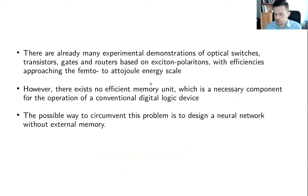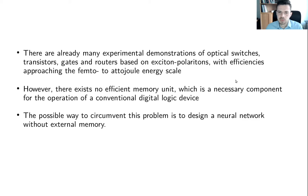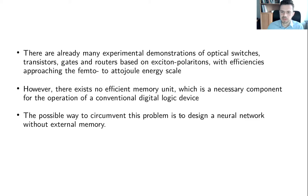There are already many experimental demonstrations of switches and transistors using exciton polaritons, with efficiencies approaching femtojoule or attojoule energy scales. However, the problem is that we don't have efficient memory for storing and retrieving information at those energy scales — a necessary component for conventional digital devices. To avoid this problem, we can design a neural network without external memory, where information is processed on the fly, eliminating the necessity to store information during processing.